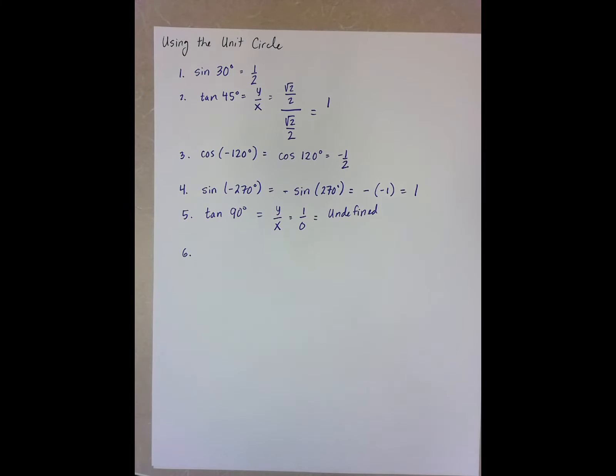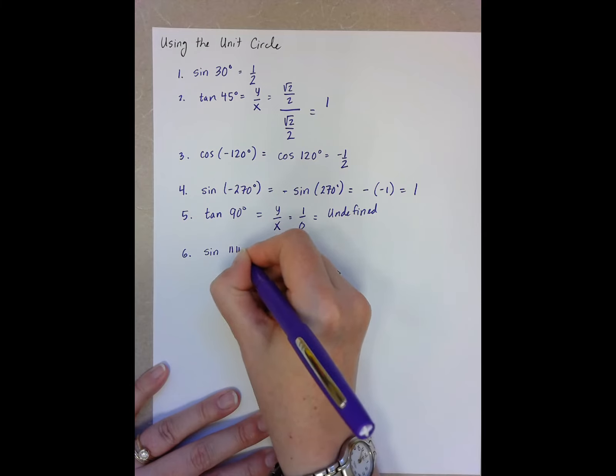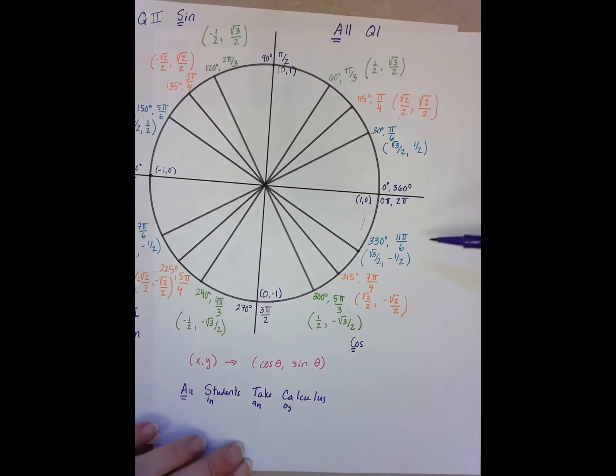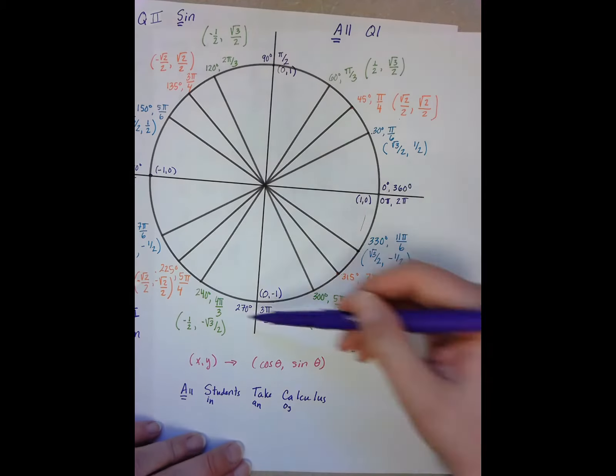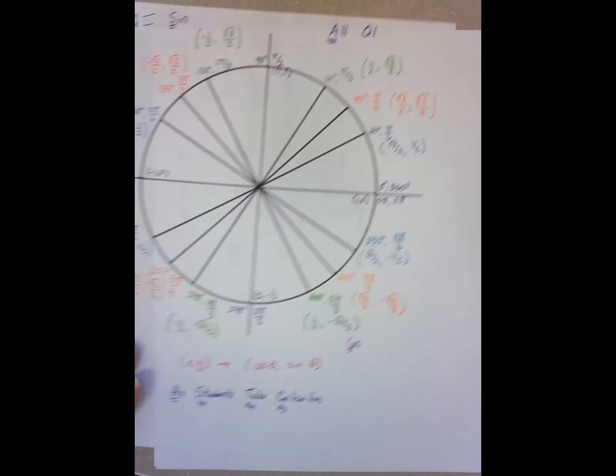So now on to some radian examples. Sine of 11 pi over 6. So 11 pi over 6 is right here. It's 330 degrees. Sine is my y-coordinate, so it's negative one-half.